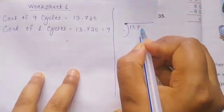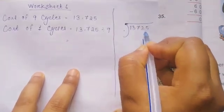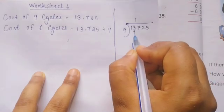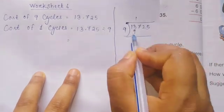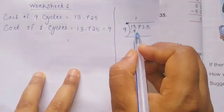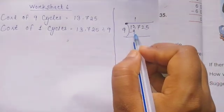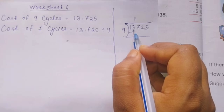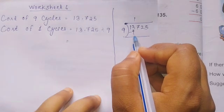13,725 divided by 9. We begin the long division. 13 divided by 9 gives 1, remainder 4. The answer starts: 1...